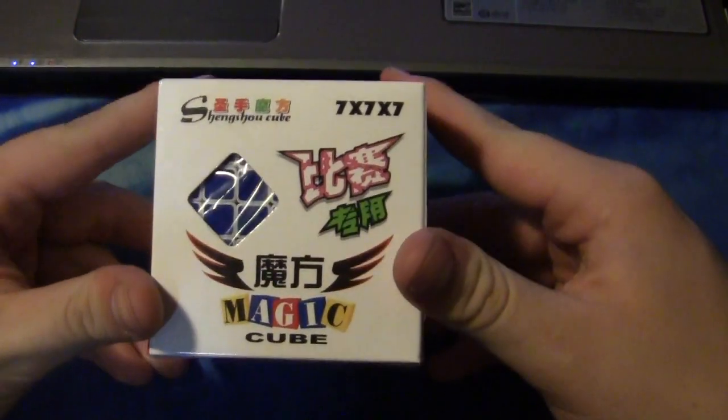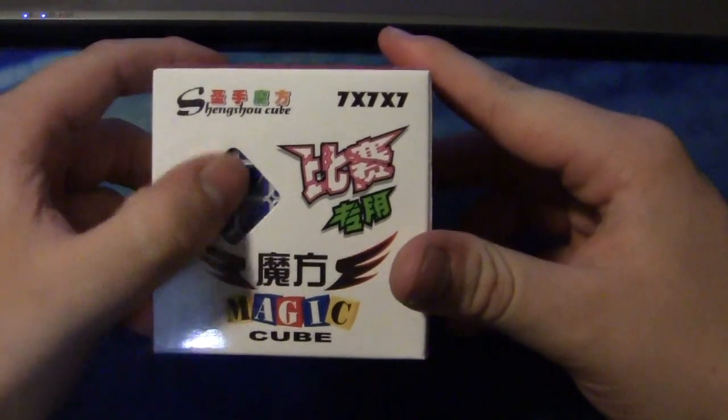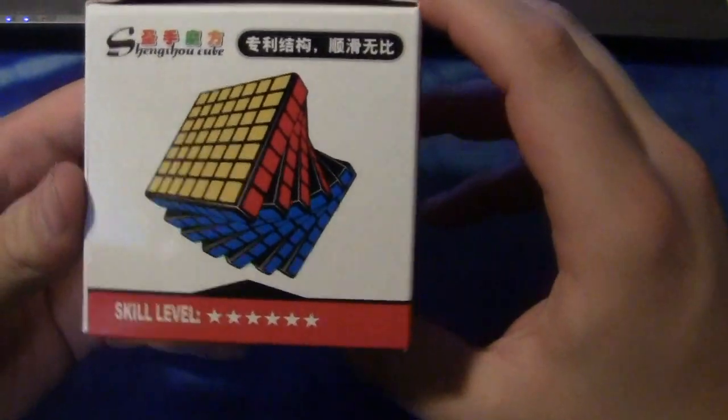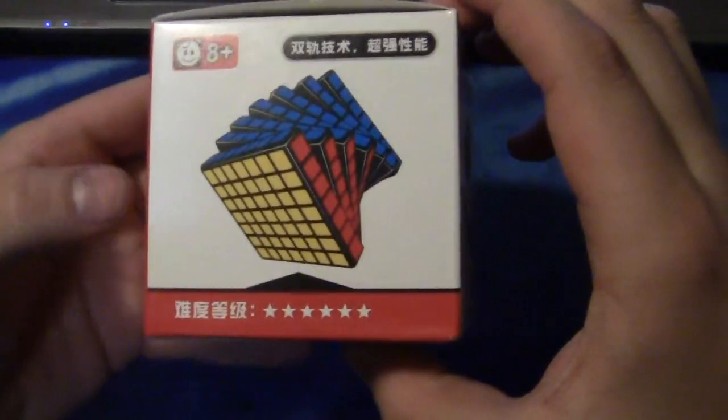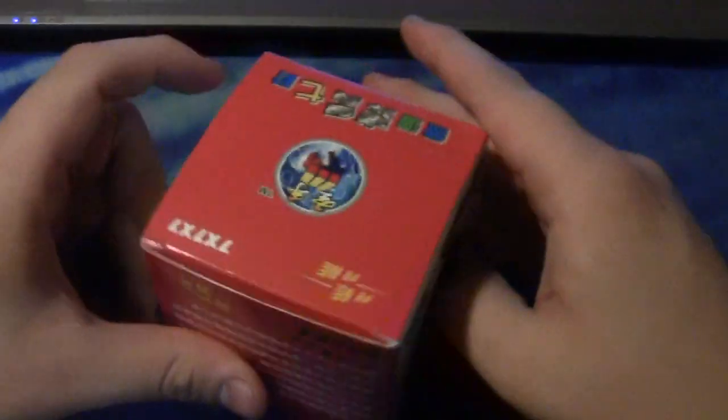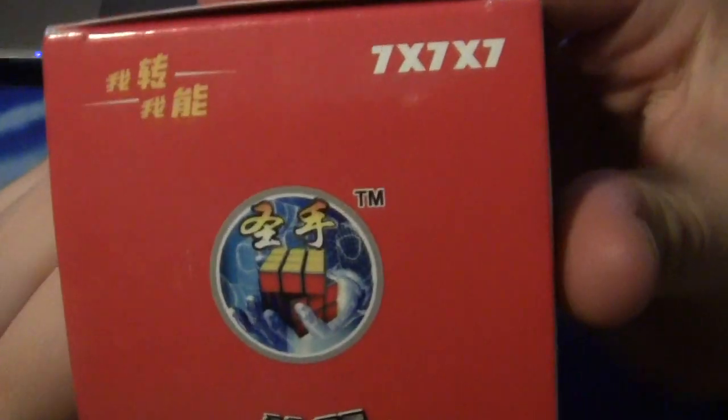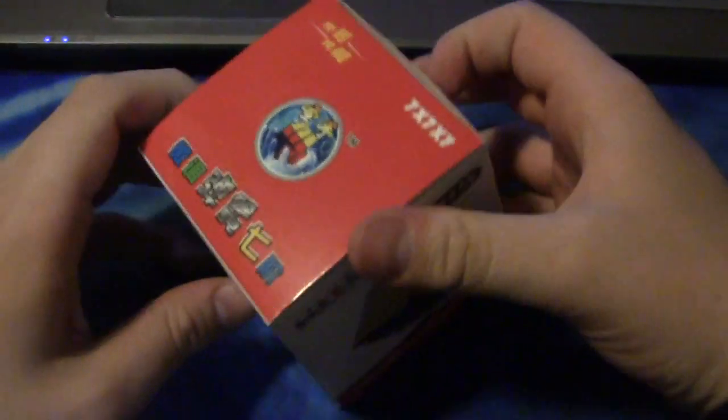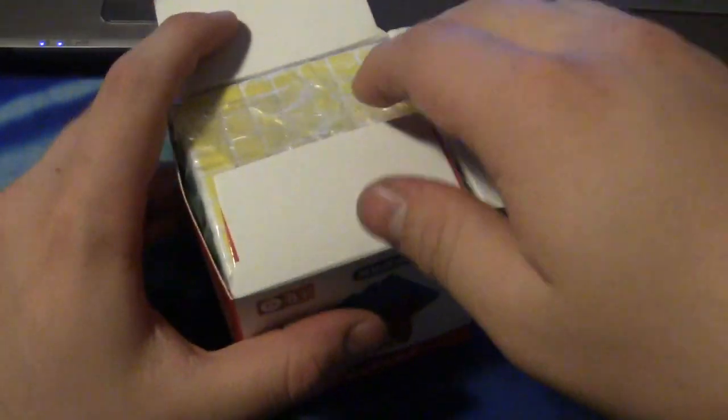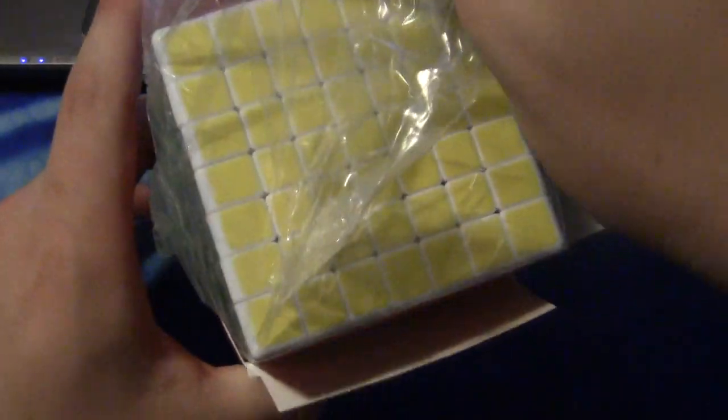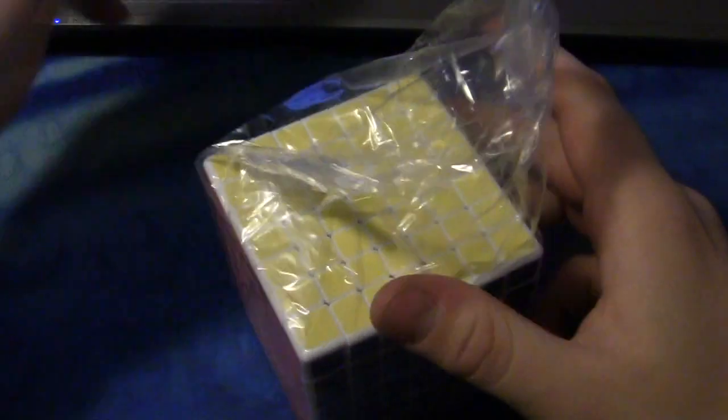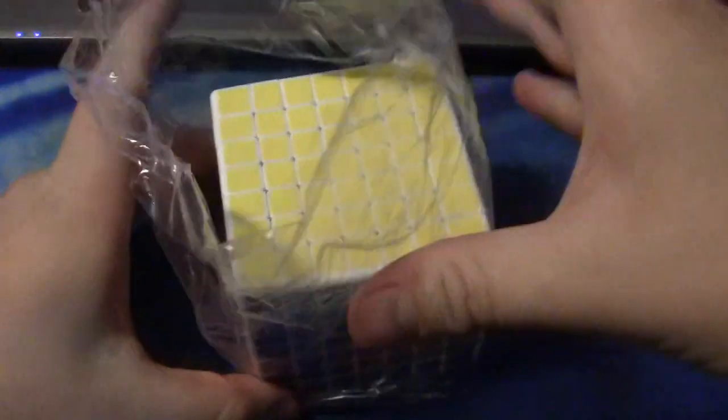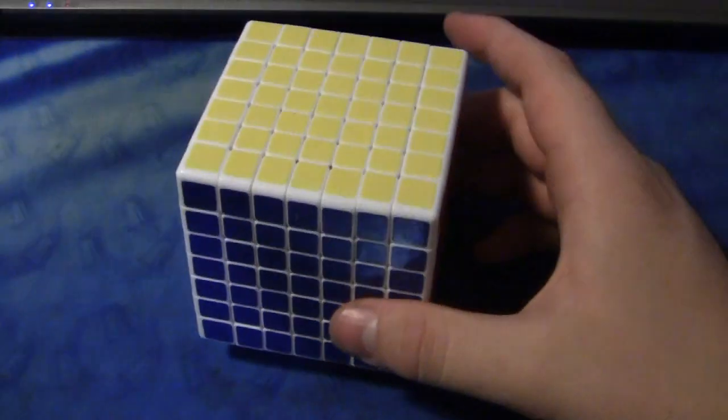So here's the 7x7 in its case. Normal stuff. It's a Shang Shao slash ghost hand type box. It says 7x7 on it. It comes in a bag. Boom.